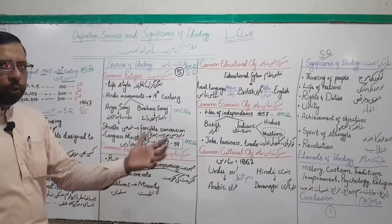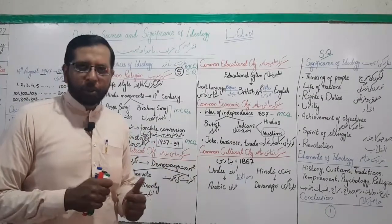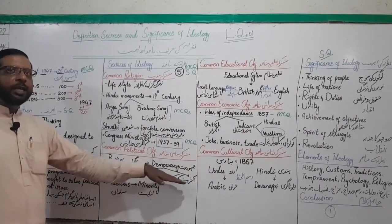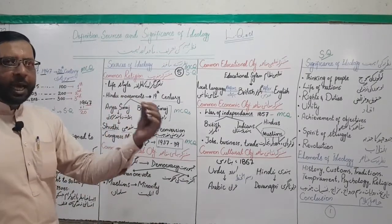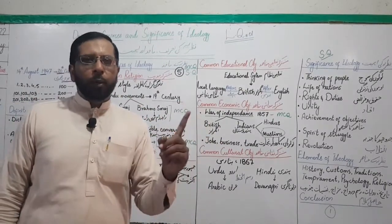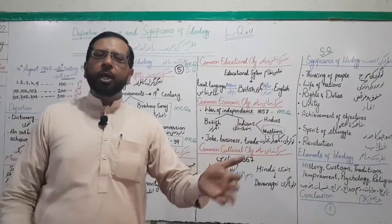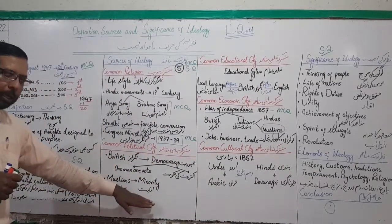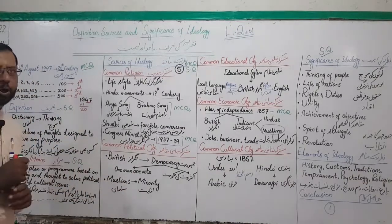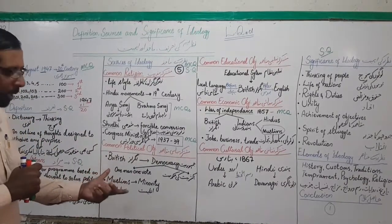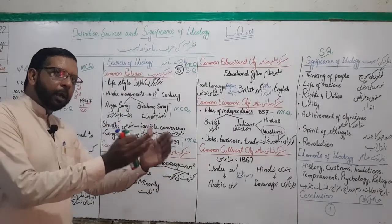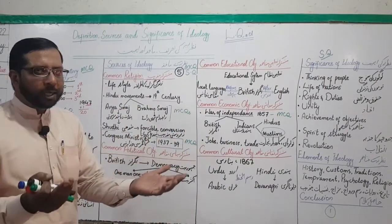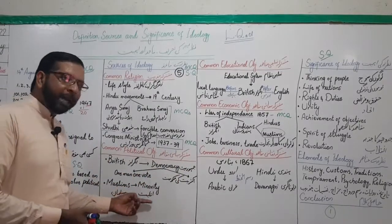Jamhooriyat ka tasawwur Angrez le kar aae — is se pehle yahan badshahaten hoti thin. There were two basic principles of democracy: one man one vote, and majority is authority. Har kisi ka ek vote hoga — chaahe parha likha ho ya anparh, ameer ho ya ghareeb, mard ho ya aurat — sab ka ek vote, aur jiske paas majority hogi woh jeet jaega. According to this, Muslims in subcontinent were a minority — Hindu dominant majority mein the.